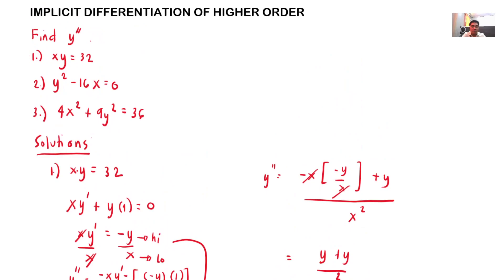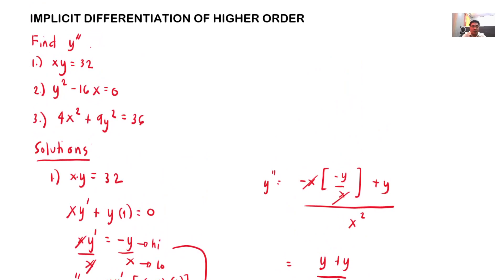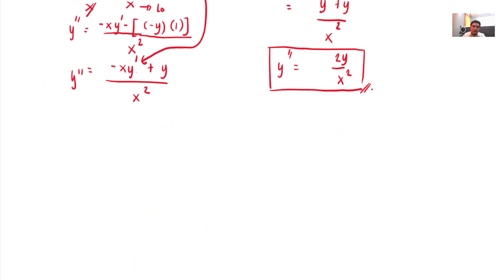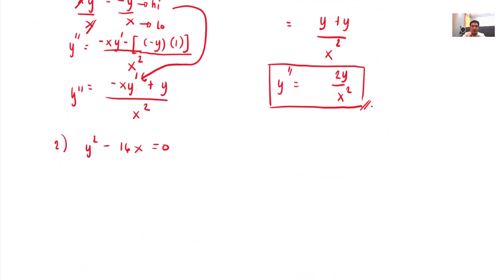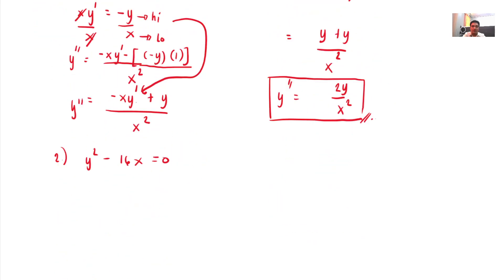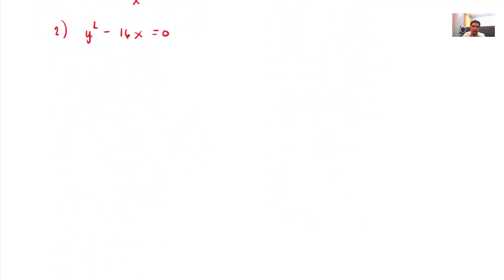Let's solve example number 2: y squared minus 16x equals 0. First, we solve the first derivative. The derivative of y squared: copy the base, power minus 1, times derivative of y which is y prime, minus derivative of 16x, which is 16. The derivative of 0 is 0.